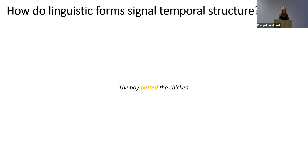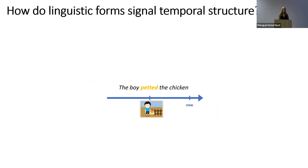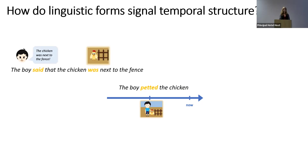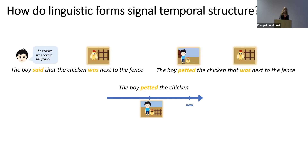If you hear 'the boy petted the chicken,' what can you tell about the temporal structure of this event? There's this event where a boy pets a chicken, and from the past tense morpheme we know it happened at some point prior to now. But oftentimes we talk about complex events, such as speech act reports — 'the boy said that the chicken was next to the fence' — or situations like 'the boy petted the chicken that was next to the fence.' In both cases we have two events with no explicit linguistic information about when each happened. So how do we know how these two events temporally relate to one another?